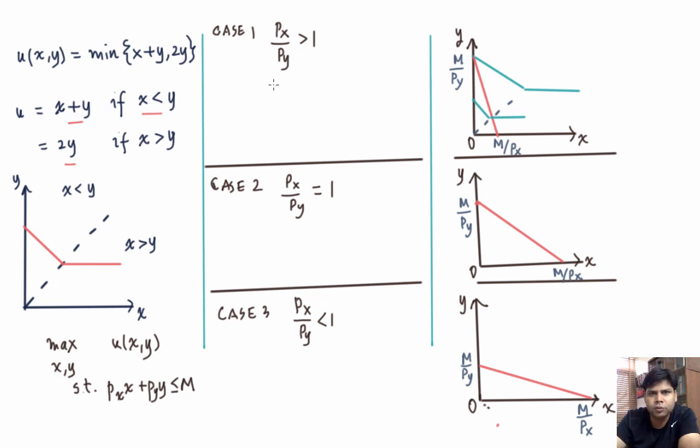So the solution to the consumer's problem in this case will be xd equals 0 and yd equals m by py. If we solve the problem in case 2,